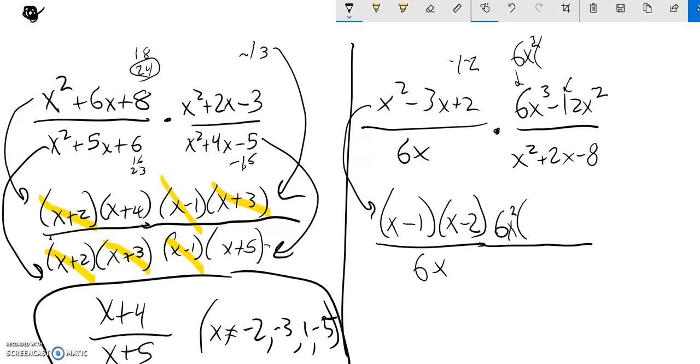So notice if I take out an x, 6x squared, what's left here is just an x. What's left here is a 2.